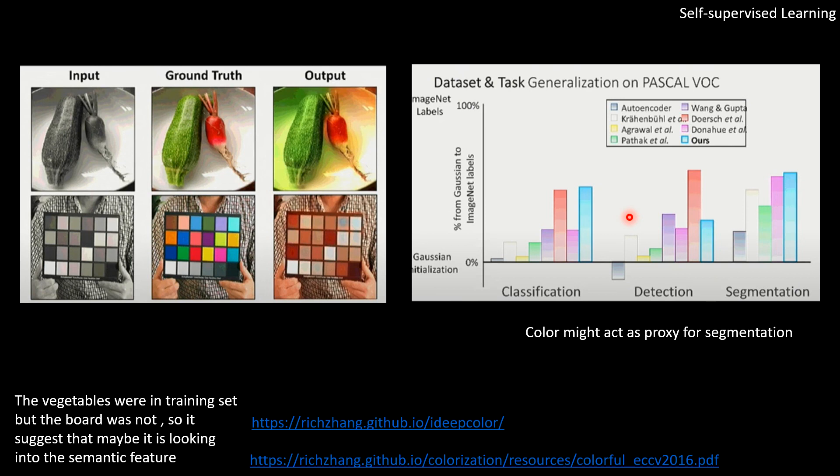And this is another scenario where you can transfer it to completely different tasks for which it's not even intended to. For example, the learned representation can be evaluated by gauging its performance on the classification task, on the detection task, or even on the segmentation task.